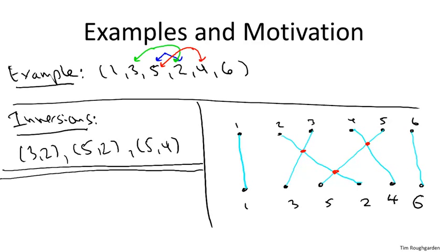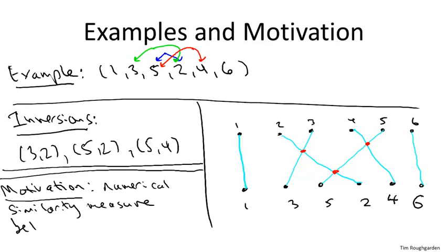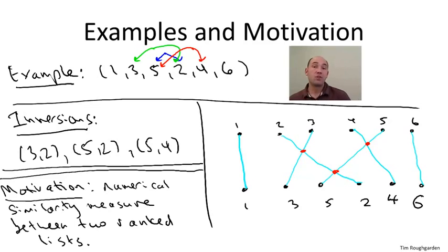Now, why might you want to solve this problem, you might ask? Well, there's a few reasons it comes up, but one would be to have a numerical similarity measure that quantifies how close two different ranked lists are to each other. For example, suppose I took you and a friend, and I took, identified ten movies that both of you had seen, and I asked each of you to order, to rank these movies from your most favorite to your least favorite.